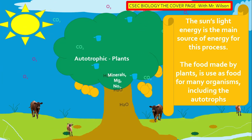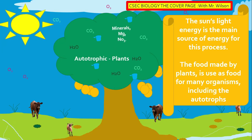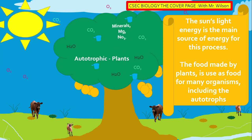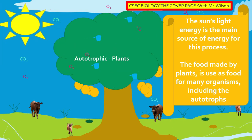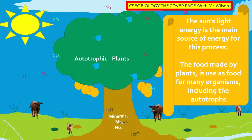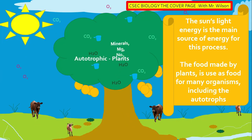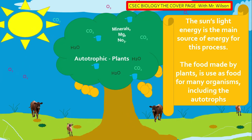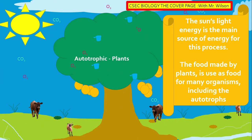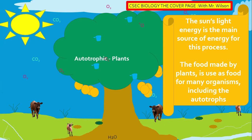Here we have the plant with fruits and, of course, the food that is made during photosynthesis is stored in these fruits and in various parts of the plant.